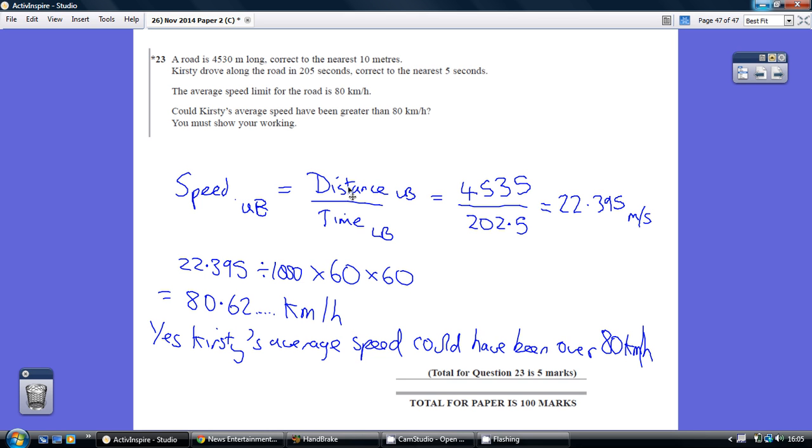The biggest distance - we're told it's 4530 metres correct to the nearest 10 metres. The absolute maximum it could be and still round down to 4530 is effectively 4535. Just a fraction under it, but we're allowed to use 4535 for bound questions.